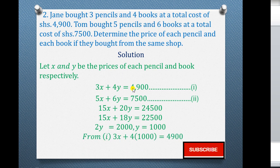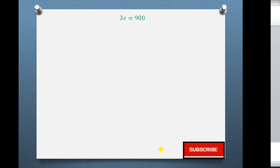We can now use any equation to find x. From equation one, substituting y = 1,000: 3x + 4 × 1,000 = 4,900. Multiplying 4 times 1,000 gives 4,000, which we move to the right-hand side, so 3x = 4,900 minus 4,000 = 900. Dividing through by 3 on both sides gives the value of x as 300.